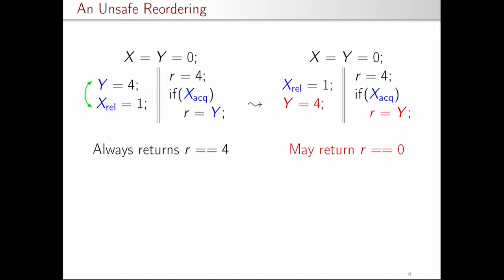Now let us modify this program a bit. Here we initialize location R with value 4. At the end of this program: if X_acquire reads a 0 value, R equals 4; otherwise R reads from the first thread where Y also has the value 4. So in this program R will always return the value 4.